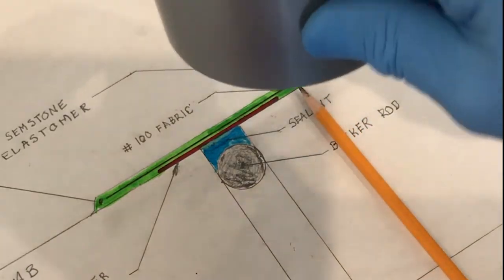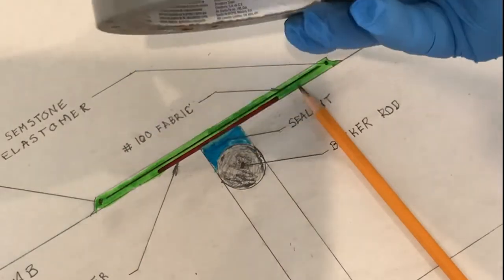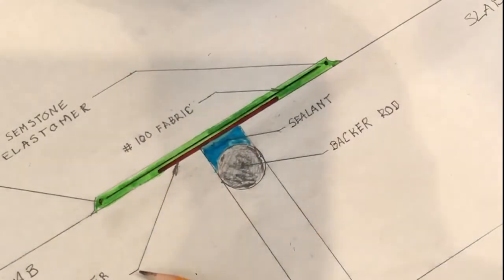For bond breaker tape, we use real simple 3M duct tape, two inches wide, and the fabric you see here is a reinforcement material. It's just good old number 100 cutting fabric, pre-cut four inches wide.